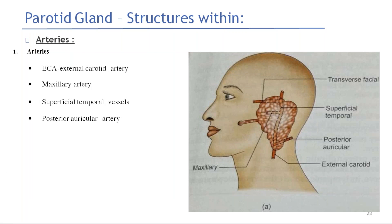In parotid, there are some structures present within which should be preserved. Coming to the arteries within the parotid gland: the external carotid artery, the posterior auricular artery, the superficial temporal artery, and the maxillary artery.